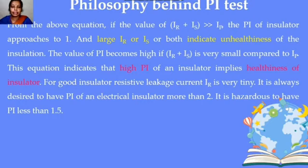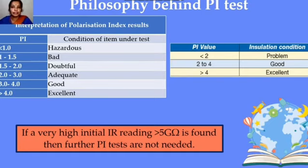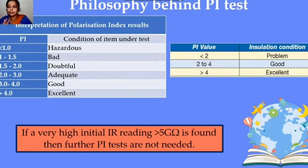It is desirable to have a PI greater than 2; it is hazardous to have a PI less than 1.5. The interpretation: PI less than 1 is hazardous and the equipment should be replaced; 1 to 1.5 is bad; 1.5 to 2 is doubtful; 2 to 3 is adequate; 3 to 4 is good; above 4 is excellent. Summarized: less than 2 indicates a problem; 2 to 4 is good condition; greater than 4 is excellent and no maintenance is needed. If initial IR reading is greater than 5 gigaohms, PI testing is not necessary.